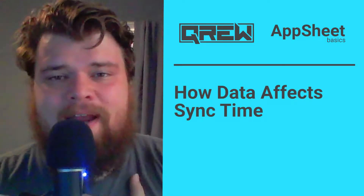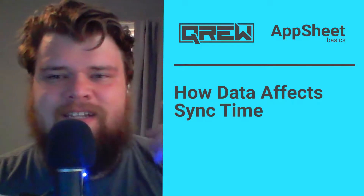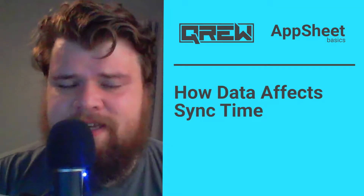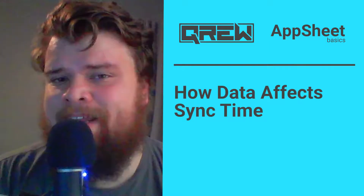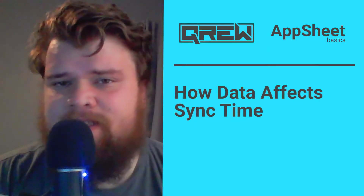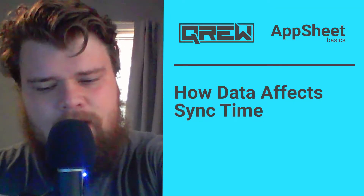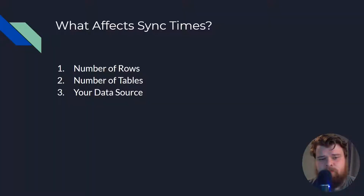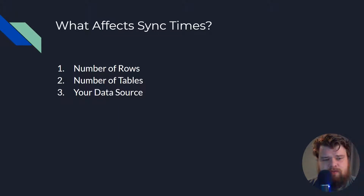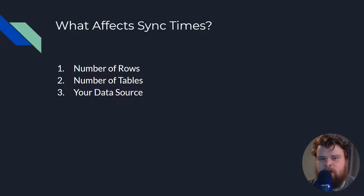My name is Benjamin Anderson and in today's video we're going to be continuing our series on sync times by talking about how our data is affecting our sync time in AppSheet. There are three things about our data that are affecting our sync time: the number of rows in each table, the number of tables themselves, and the source we're bringing our data from — Google Sheets, Excel, SQL.